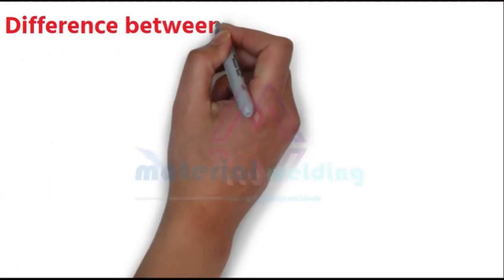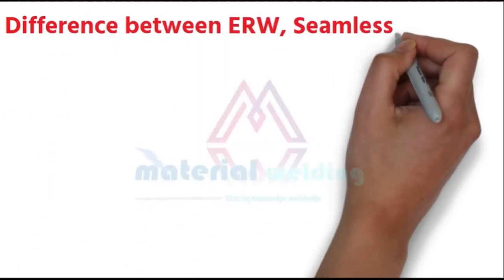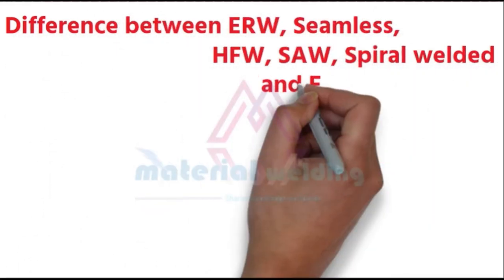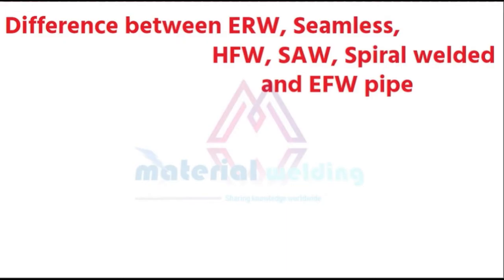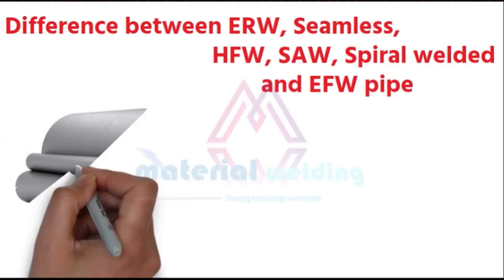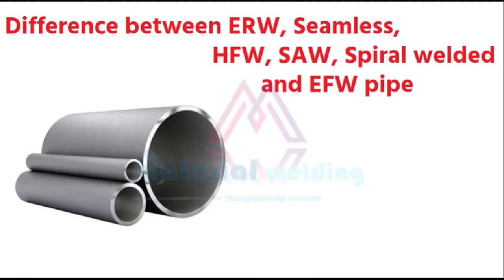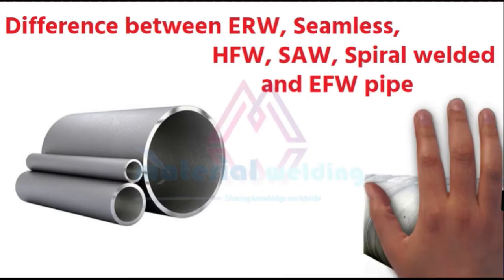In this video, we will learn what are the types of pipes such as ERW, Seamless, HFW, SAW, Spiral, and EWF pipes, and how they are manufactured.